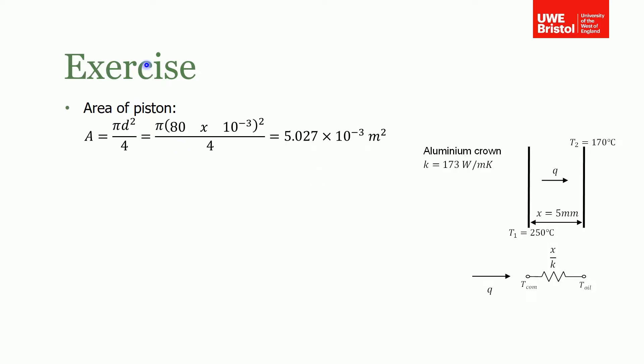So first of all you need to work out the total heat transfer. You need to know the area of the piston, which you can simply work out from the geometry. If you plug in the numbers, you end up with 5.027 times 10 to the minus 3 meters squared. The heat transfer rate from Fourier's law is equal to the thermal conductivity times the area times the temperature difference divided by the thickness. Plug in all the numbers and you should calculate the heat transfer to be 13.91 kilowatts.